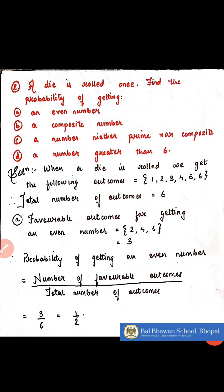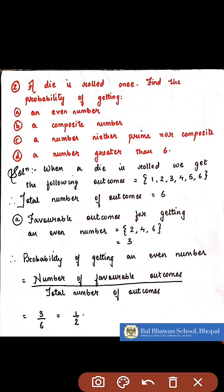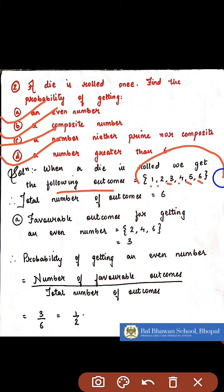Now let us see this example. I have a die and it is rolled once. You have to find the probability of getting an even number, a composite number, a number which is neither prime nor composite, or a number which is greater than 6. We all know that when a die is rolled, we can get 1, 2, 3, 4, 5, or 6. We will not get anything apart from these 6 numbers. Therefore, the total number of outcomes when a die is rolled is 6.